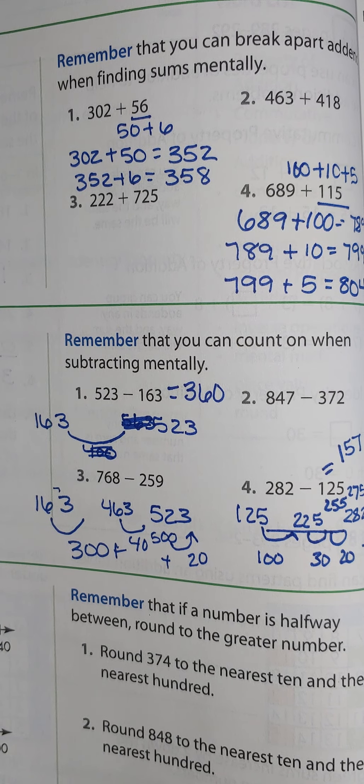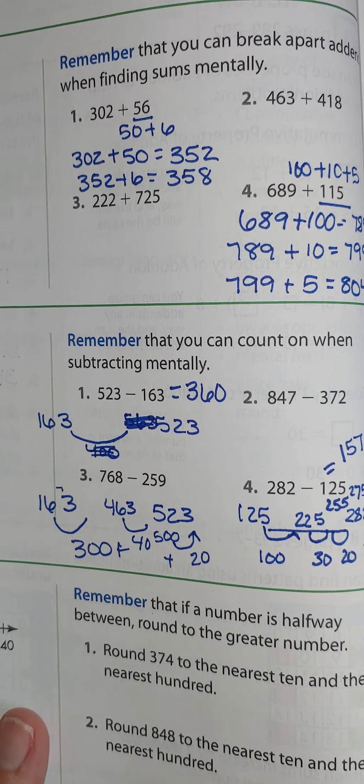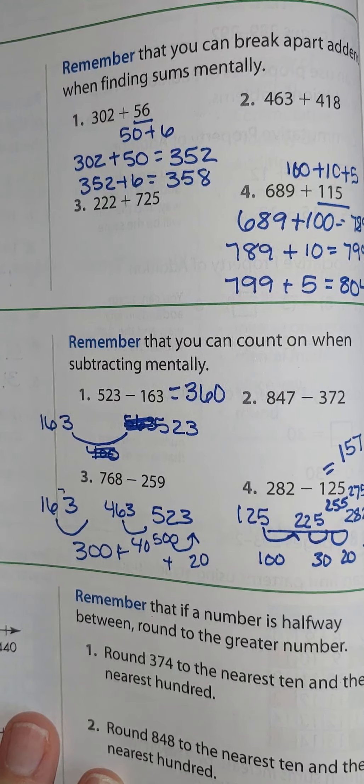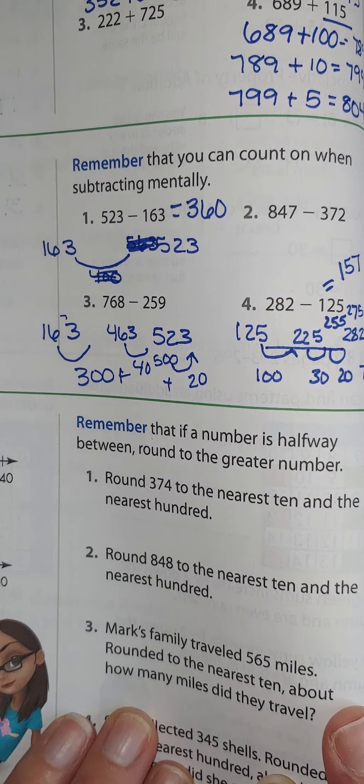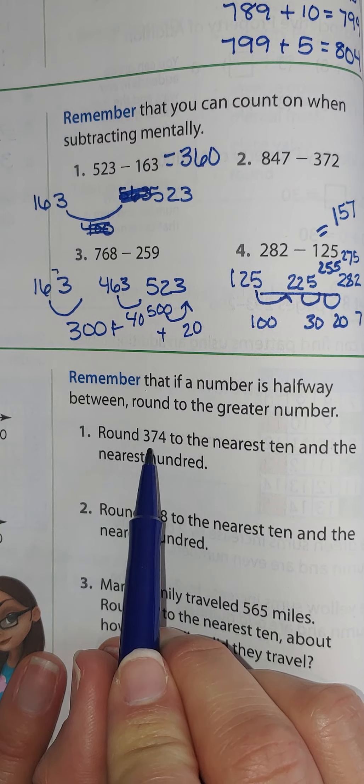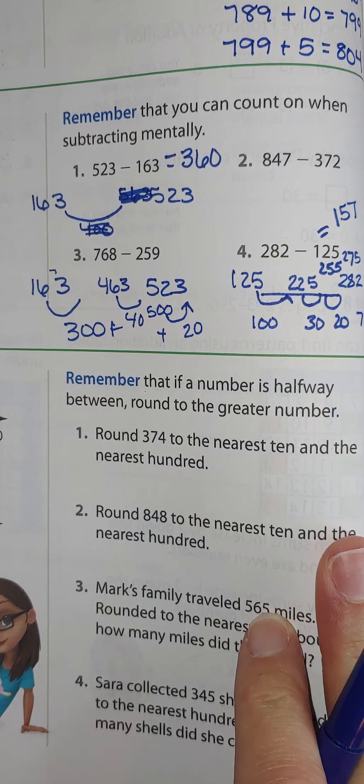Remember, you can use lots of different strategies for this, but this is just one easy way to start going up. All right, let's go down and talk about rounding. So let's review our rounding rules. 374 to the nearest 10 and to the nearest 100.